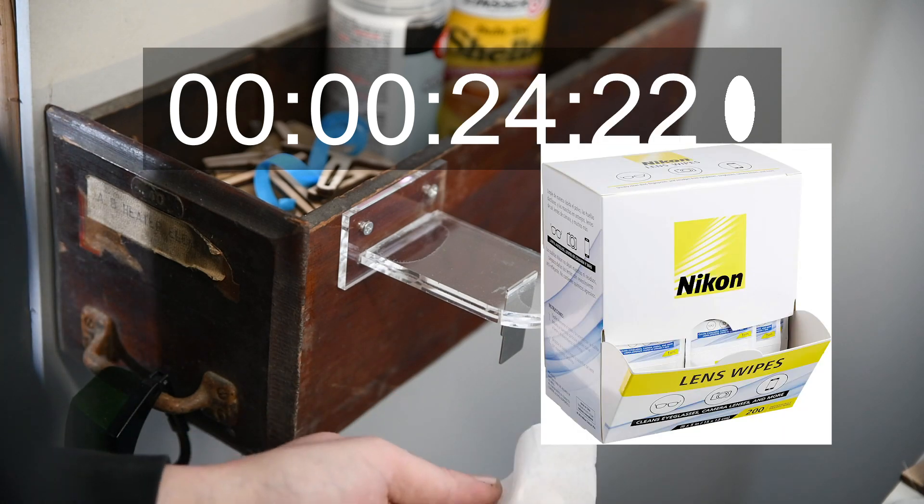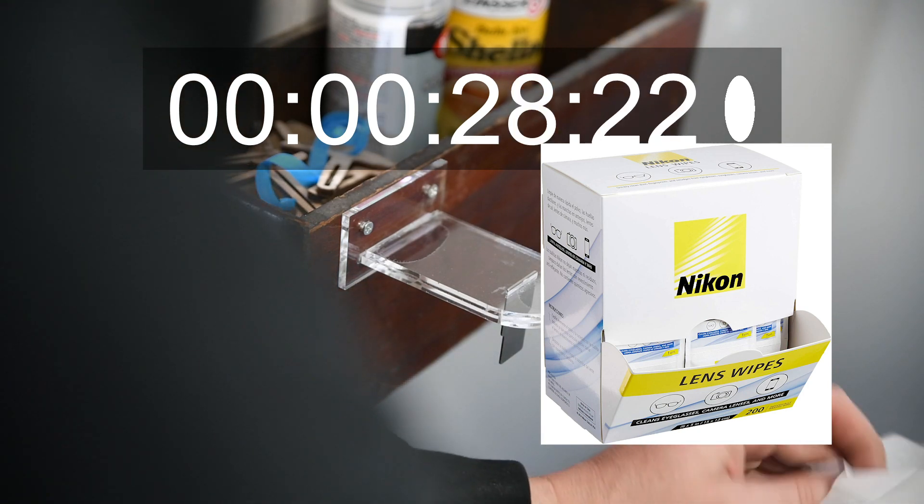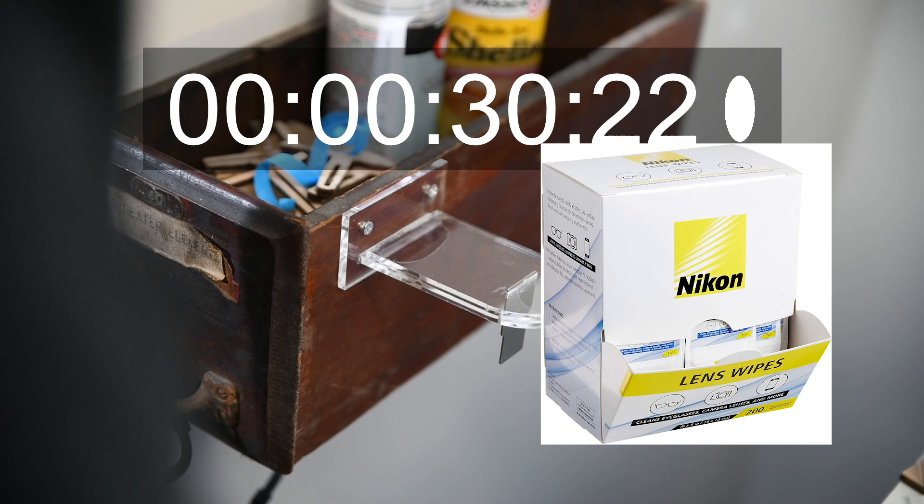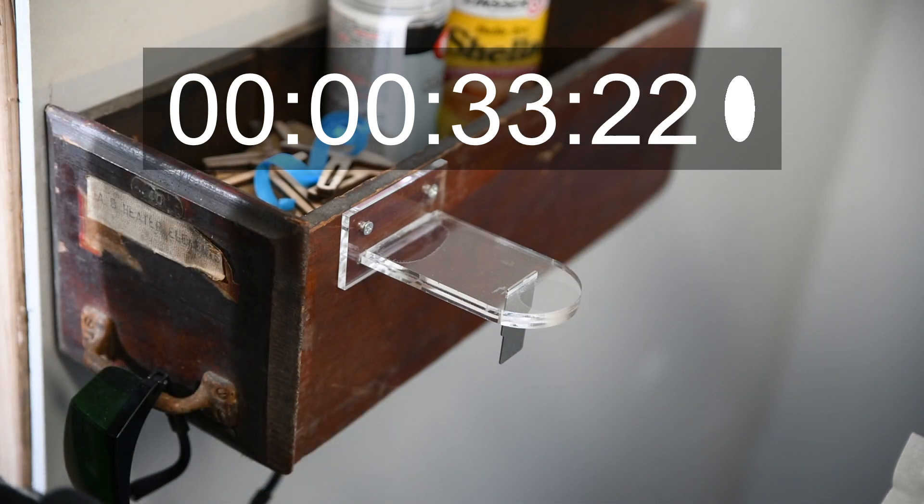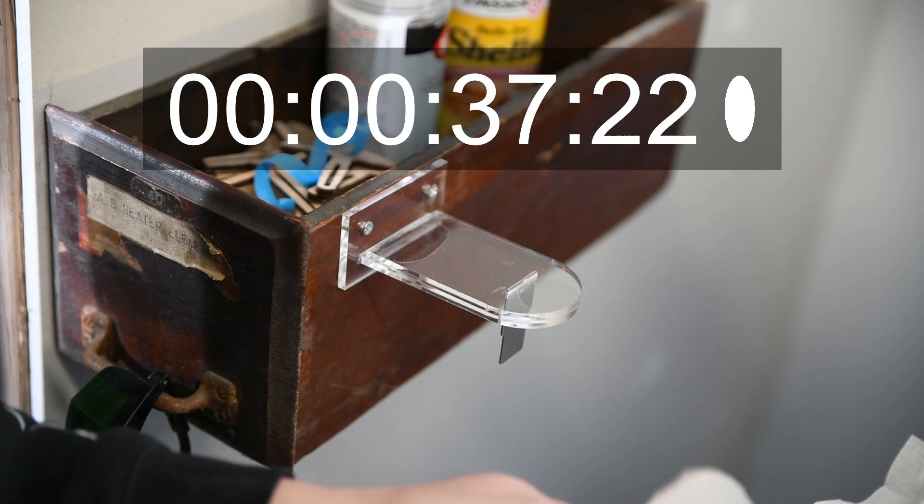This is an alcohol wipe, a Nikon lens wipe, it's a wet kind of wipe. And then I just get a dryer wipe. Make sure it's all nice and cleaned off.